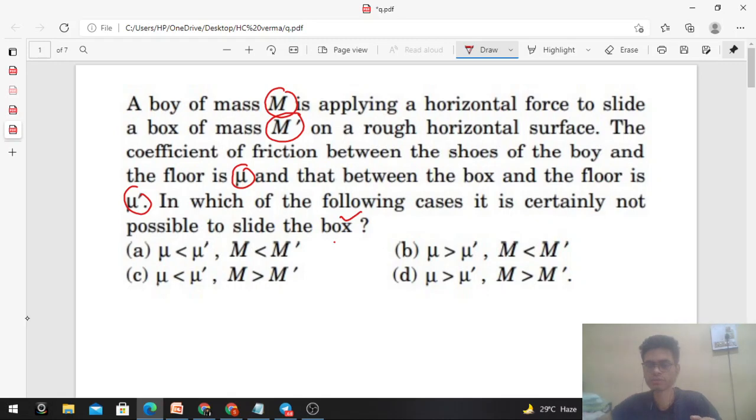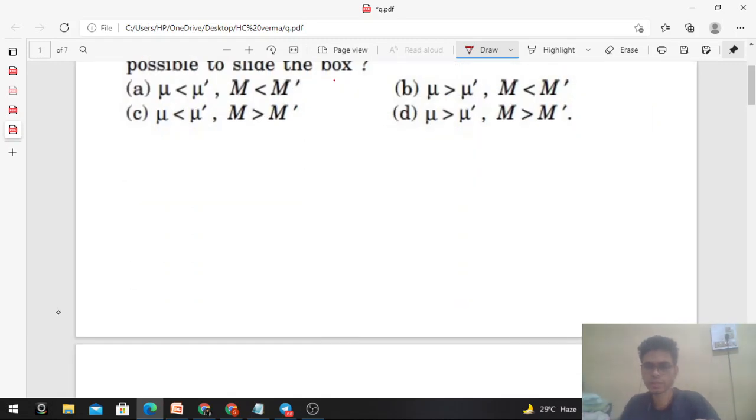Okay, fine. So this is the rough horizontal surface, the box has mass M', and the coefficient of friction between the block and the surface is μ'.